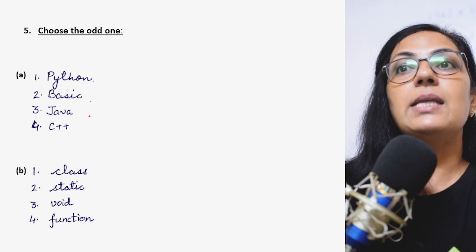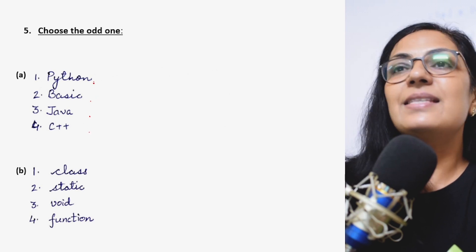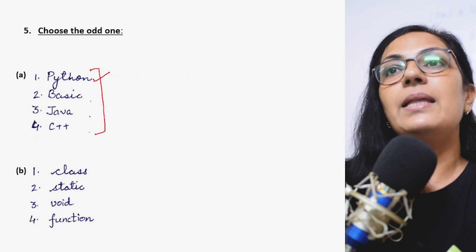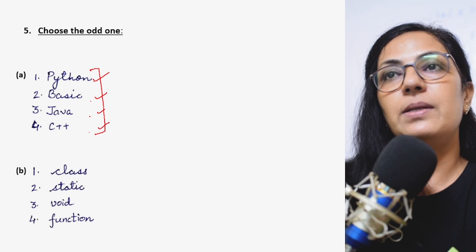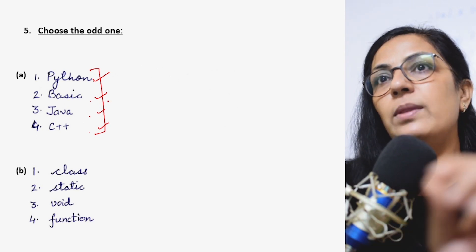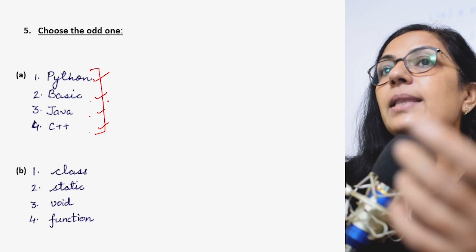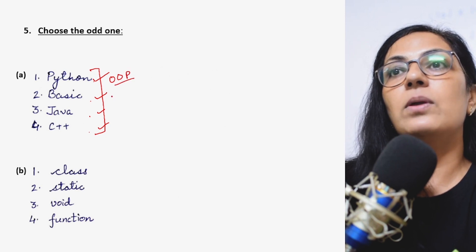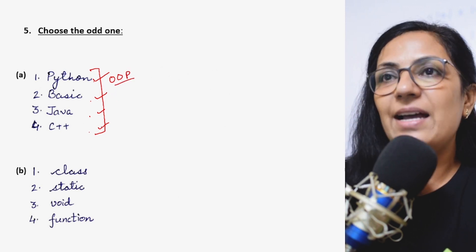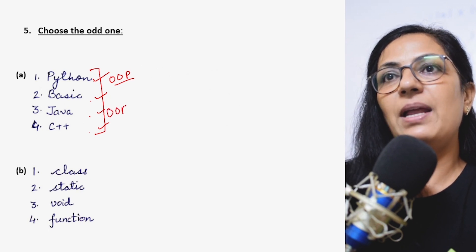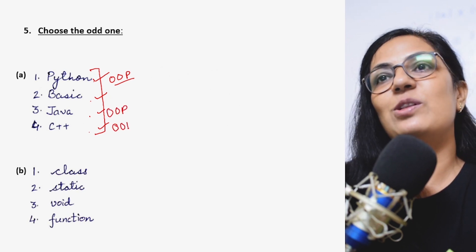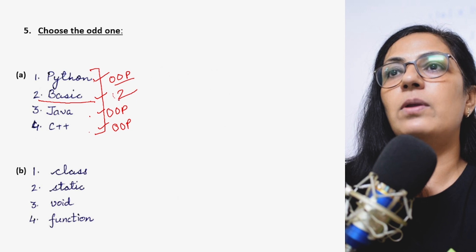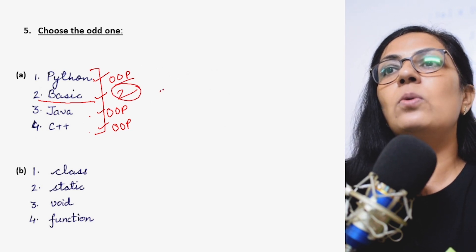Now here the languages names are written: Python, Basic, Java, C++. This is in your first chapter of class 9. Different languages are there - Python, Basic, Java, C++. Children, whenever you get the question of choose the odd one, please observe, read the question carefully. Python is object-oriented programming language. Basic is not. Java is also object-oriented programming language and C++ also.